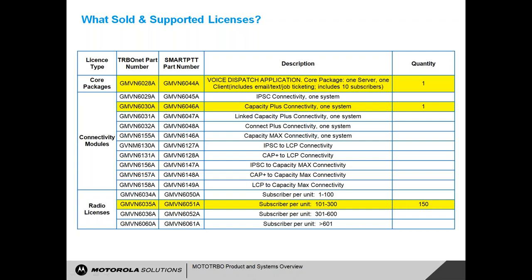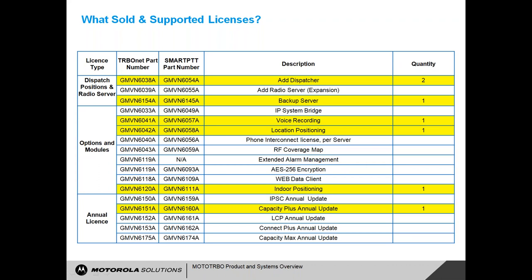Additional optional modules for the worked example: two additional dispatchers beyond the one in the core, a redundant server, voice recording, location positioning, indoor positioning, and the Capacity Plus annual update. This annual update is critical — it must become part and parcel of your yearly ongoing maintenance contract with the customer. It's not needed in year one but required from year two forward. If you don't maintain this annual license, the customer will not receive support on the system when they need it.